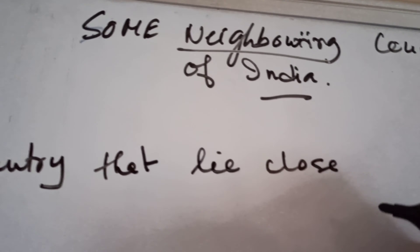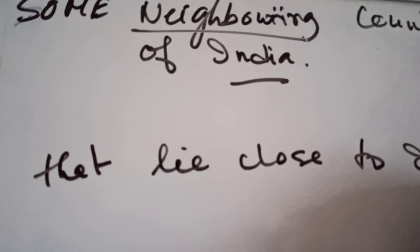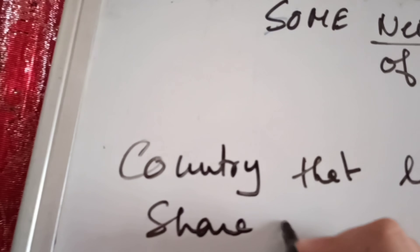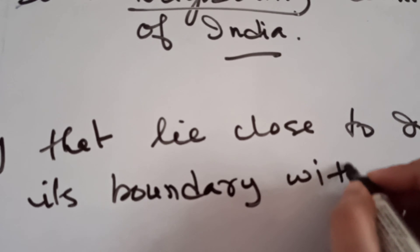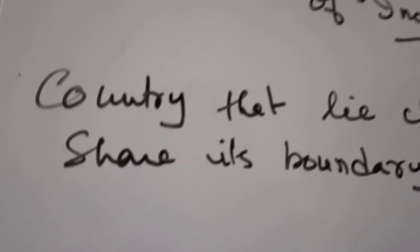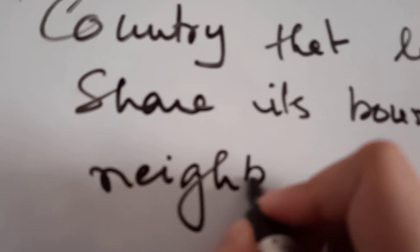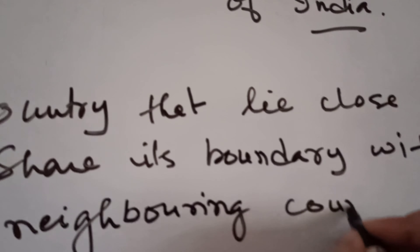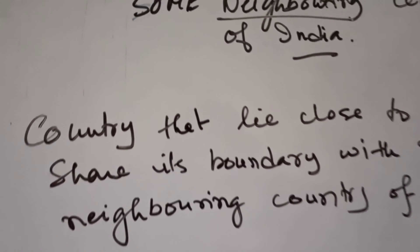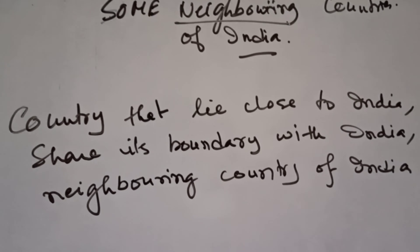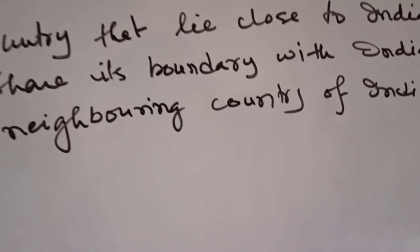Who is a neighbour? Generally, the country that lies close to India or shares its boundary with India — we call that country a neighbouring country of India. The country that lies close to India or shares its boundary with India is called the neighbouring country of India.